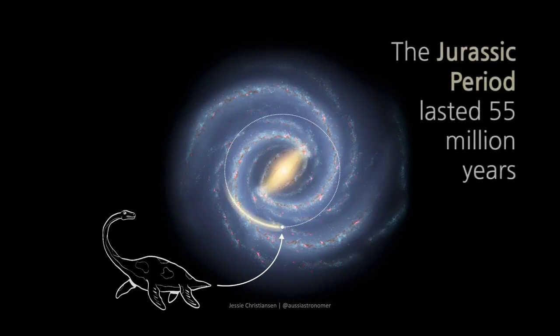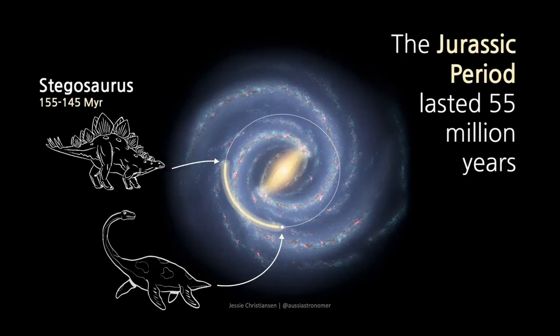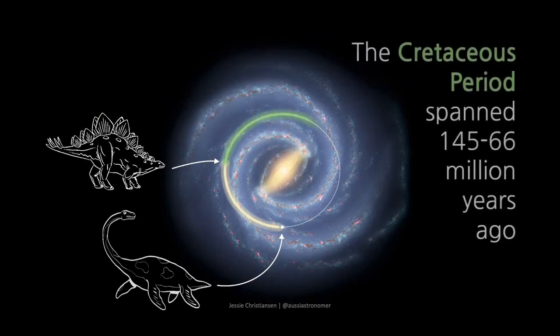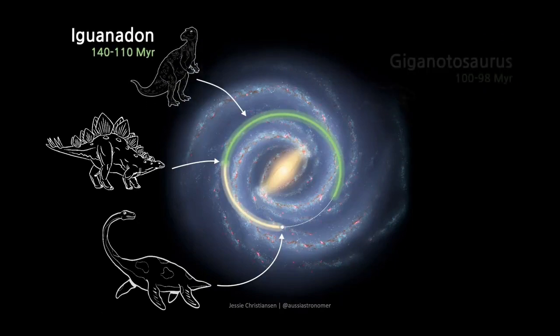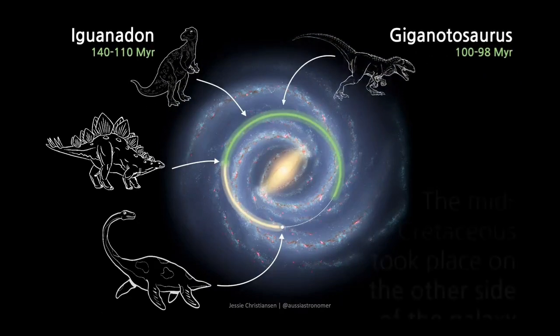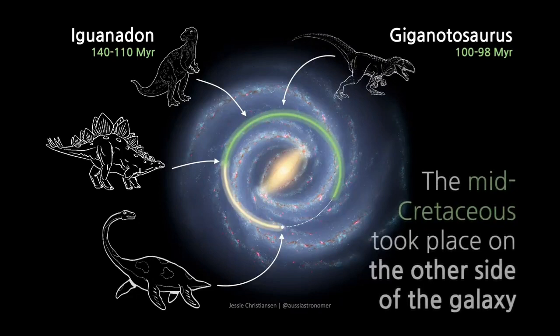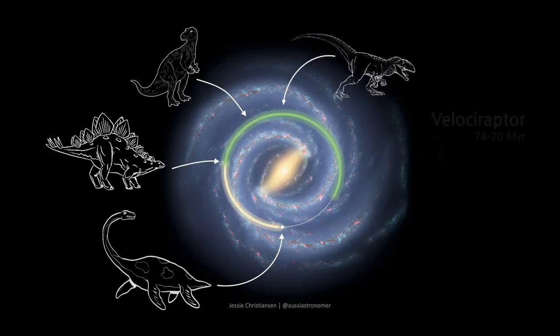The Jurassic period lasted 55 million years. The Cretaceous period spanned 145 to 66 million years ago. The mid-Cretaceous took place on the other side of the galaxy.